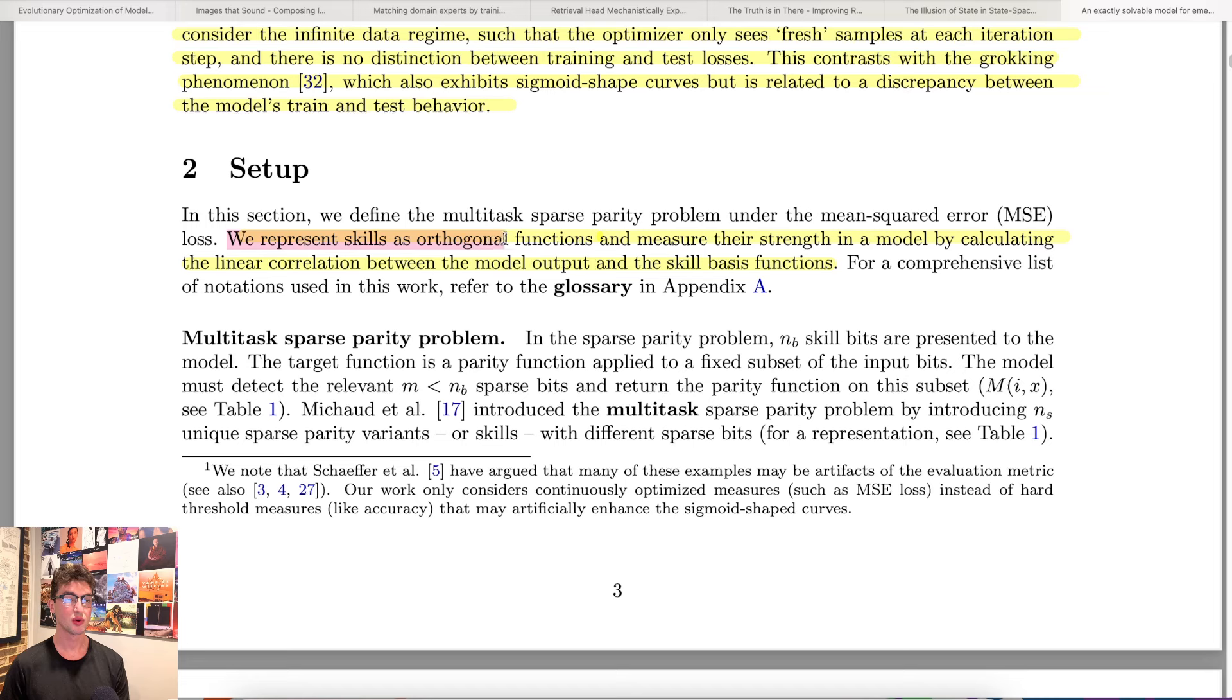We represent skills as orthogonal functions and measure their strength in a model by calculating the linear correlation between the model output and the skill basis function. So a simple function would just be corresponding to a skill, right? Any skill that you want to learn, it's just a set of inputs and a correct set of outputs, right? So if I give you these things as inputs, can you properly give me the correct output? So can the model learn the correct function? And we designed this data set such that we create a bunch of orthogonal functions, meaning functions that are not related to each other, right? So that's the model has to just successively learn each function individually. There is no way for it to learn one function and have that transferred to a different function. So we're getting very clean, discrete units here.